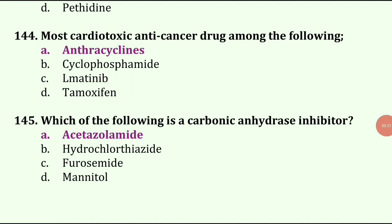Which of the following is a carbonic anhydrase inhibitor? Options are acetazolamide, hydrochlorothiazide, furosemide, and mannitol. Mannitol is osmotic diuretic. Acetazolamide is carbonic anhydrase inhibitor. Hydrochlorothiazide is thiazide diuretic and furosemide is loop diuretic.